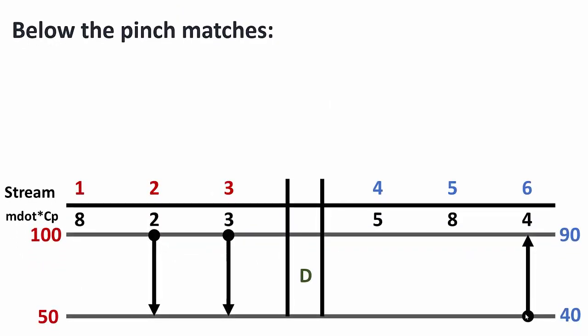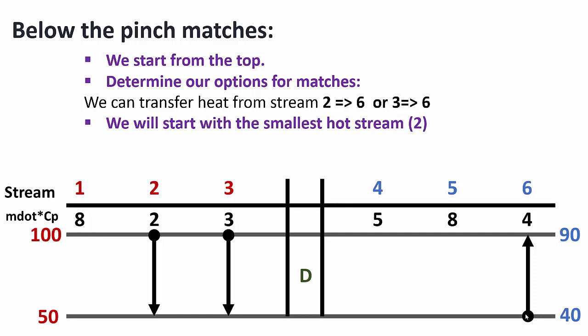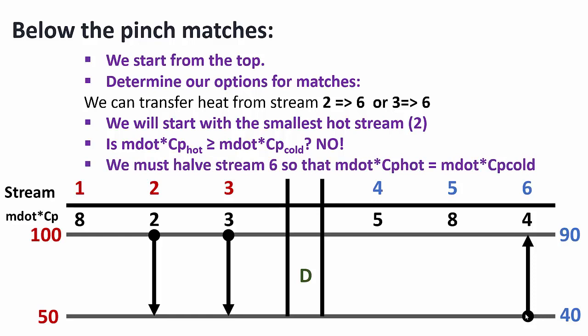Below the pinch is only block D. Starting from the top, our match options are 2-to-6 or 3-to-6. We start with the smallest hot stream, stream 2, which has the smallest Q. But M_dot·Cp hot = 2 is not ≥ M_dot·Cp cold = 4, so we must halve stream 6, making each half have M_dot·Cp = 2. Now M_dot·Cp hot equals M_dot·Cp cold for the split stream.